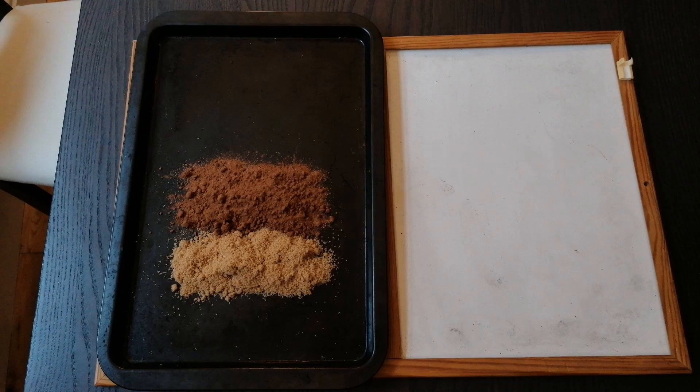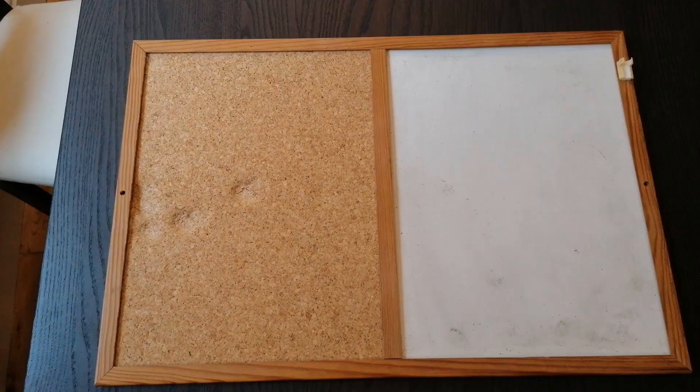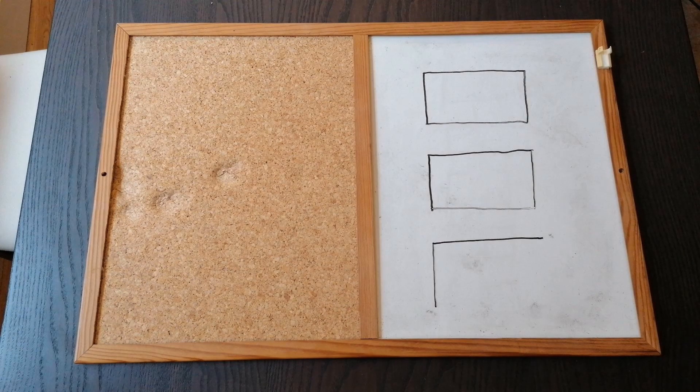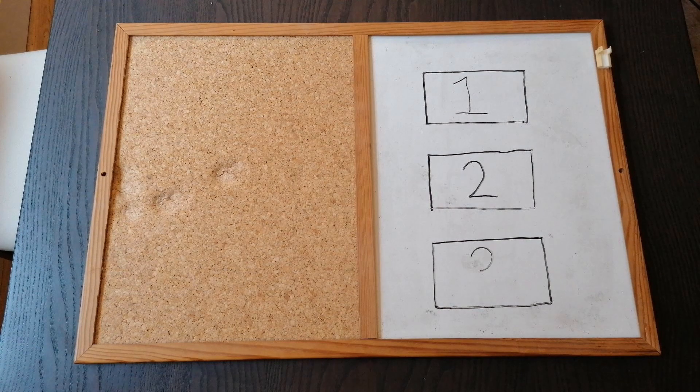This is the point at which creating a Harris matrix becomes very useful. So, when we look at a Harris matrix, we see a series of boxes containing numbers, which are then connected by lines.